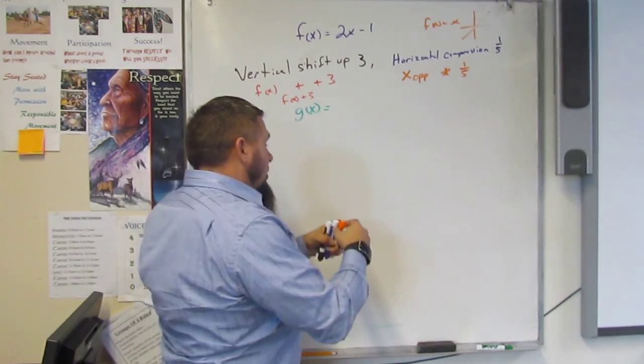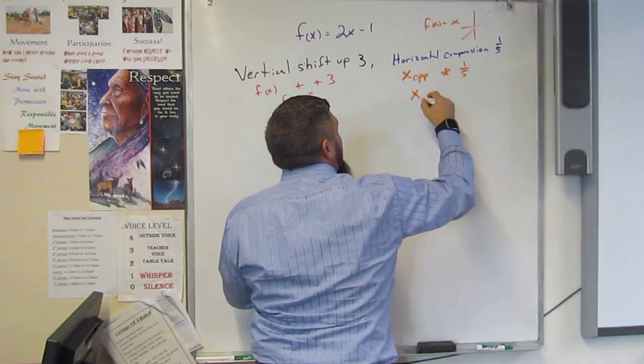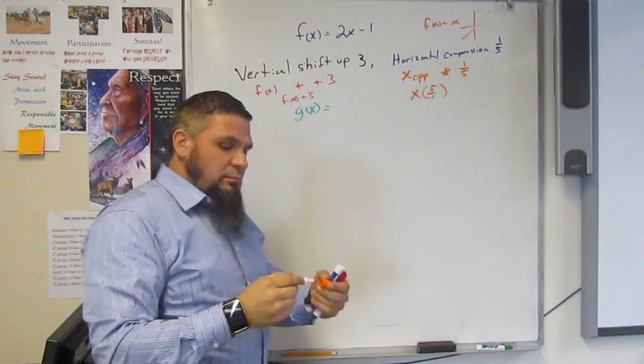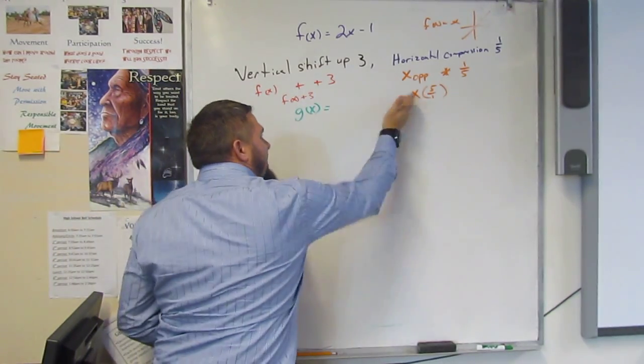So what we want to do here is make sure we see that this is x times five over one, which is just five. Now that's just the x.